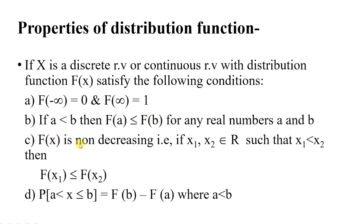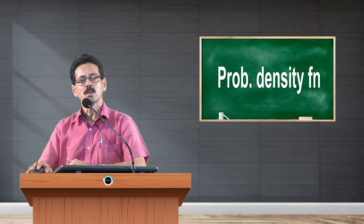What do we mean by non-decreasing function? It means if x₁ and x₂ belong to the reals such that x₁ < x₂, then F(x₁) ≤ F(x₂). The next property is: if you want the probability that X lies between a and b, you can find it using the distribution function as P(a < X ≤ b) = F(b) − F(a), where a < b. These are some of the properties of the distribution function.